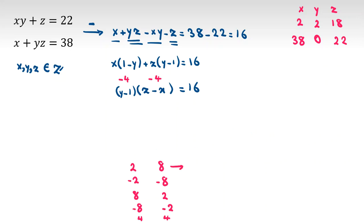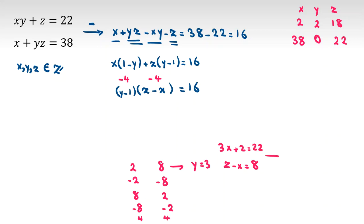Case (2, 8): y minus 1 = 2, so y = 3, z minus x = 8. Replacing y = 3: 3x + z = 22. Subtracting gives 4x = 14. Since 14 is not a multiple of 4, this is impossible — no integer solution here.